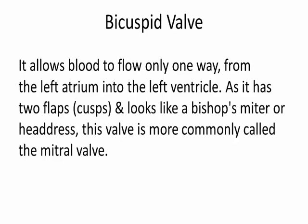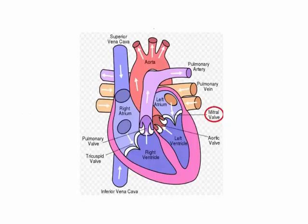Bicuspid valve. It allows blood to flow only one way, from the left atrium into the left ventricle. As it has two flaps — cusps — and looks like a bishop's mitre or headdress, this valve is more commonly called the mitral valve.